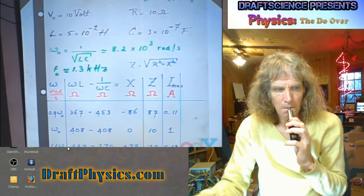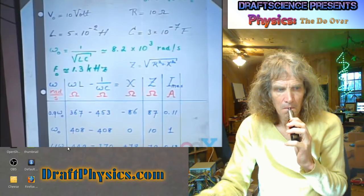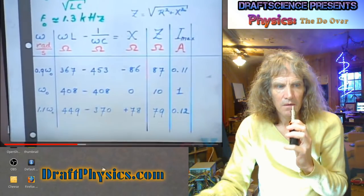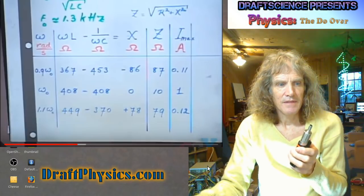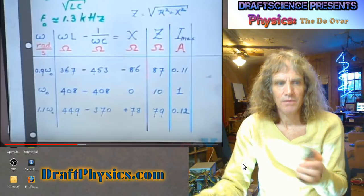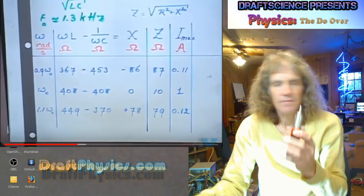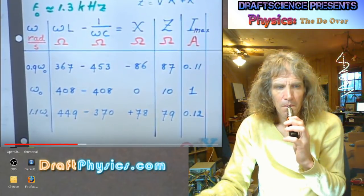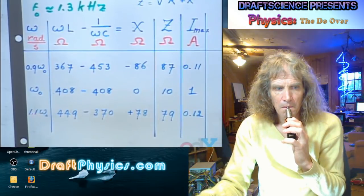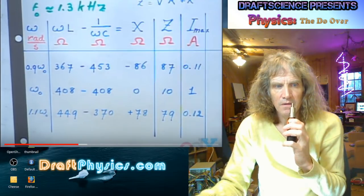The maximum current — V0 divided by Z of 87 — becomes 0.11 amperes. When the system is driven at resonance, ωL and 1/ωC have the same value, so X becomes zero and the impedance becomes just 10 ohms — the resistance. The maximum current is now V0/R, which is 1 ampere. When you're 10% over resonance, the self-inductor becomes more powerful than the capacitor, and again your current is substantially reduced. So being a little bit off resonance makes a big difference.